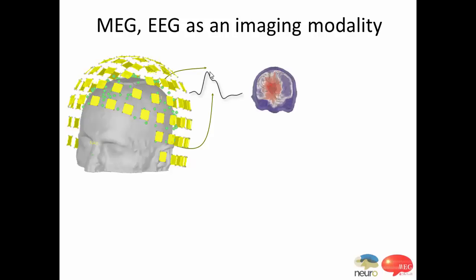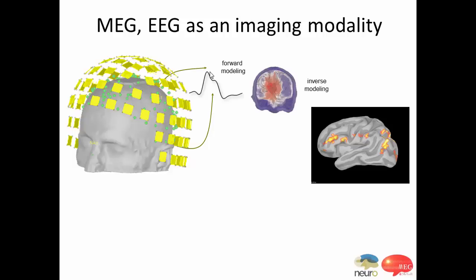If you want to do imaging, you need a good understanding of the physics. We solve Maxwell equations with quasi-static assumptions using a forward modeling approach, and we also do inverse reconstruction, which generates images where the orange blobs represent the estimation of the electrical activity of the brain. You have to imagine it's one image like this every millisecond or even less, meaning the temporal resolution and the volume of data is really outstanding.